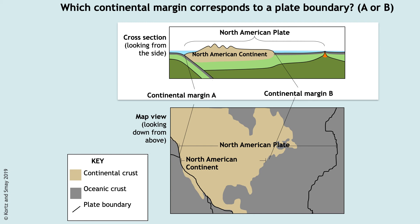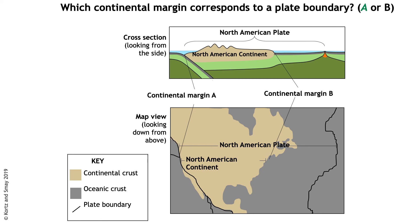The question is: which continental margin corresponds to a plate boundary — A, on the west coast of North America, or B, on the east coast? The best answer is continental margin A, on the west coast. The edge of the continent aligns with the black plate boundary line, where the tan continental crust of the North American plate meets the oceanic crust right next door. So the continental edge on the west coast of North America corresponds to a plate boundary.